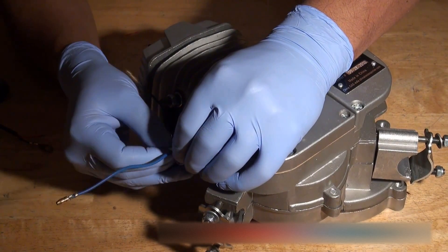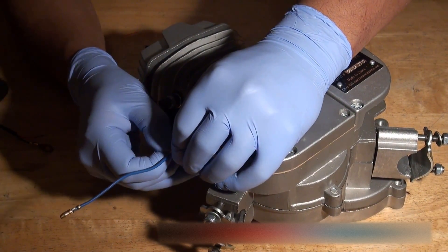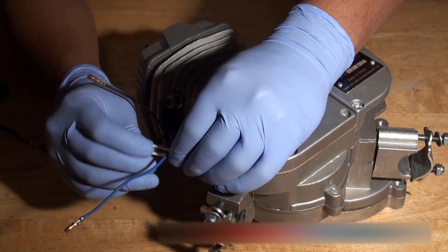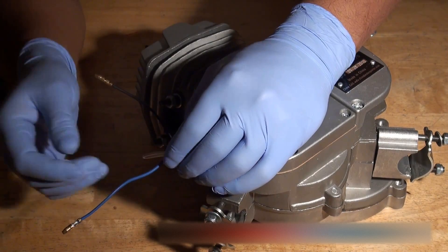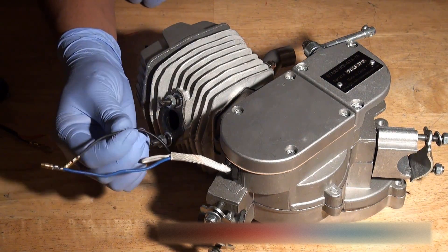Just push it back as far as it'll go. It doesn't have to go all the way down, but just makes life a bit easier. That's good enough. So now we're left with two wires coming off our engine, or coming off the magneto inside the magneto compartment of the engine.